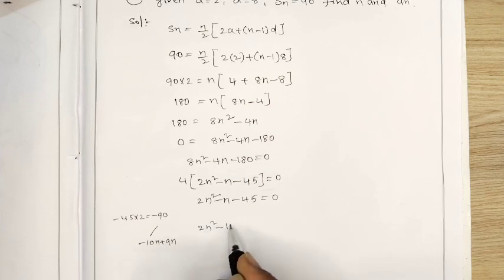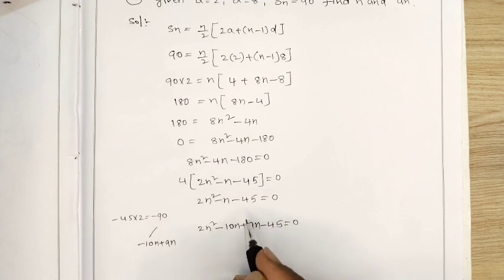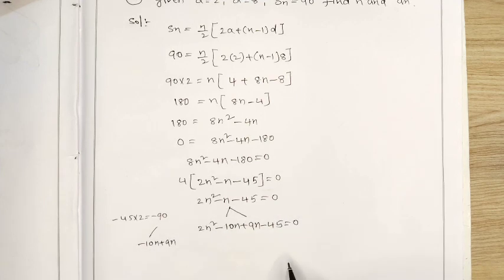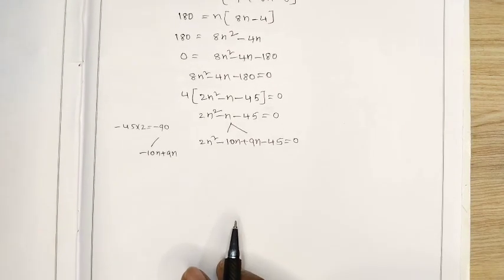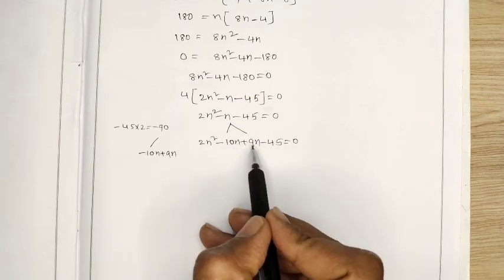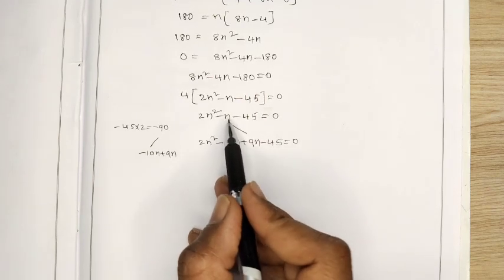So we split n as: 2n squared minus 10n plus 9n minus 45 equal 0. n is splitting as minus 10n plus 9n, which remains minus n only.